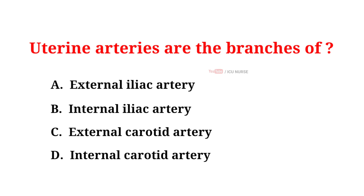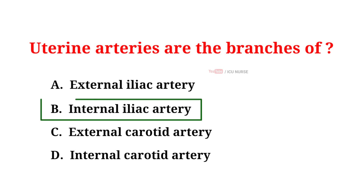Uterine arteries are the branches of: A. External iliac artery. B. Internal iliac artery. C. External carotid artery. D. Internal carotid artery. The correct answer is B: Internal iliac artery.